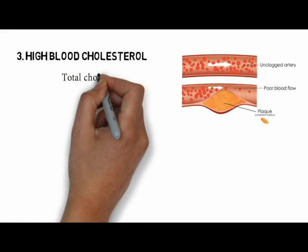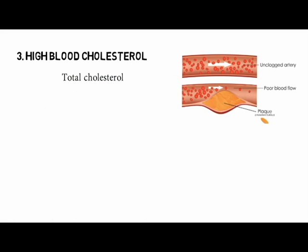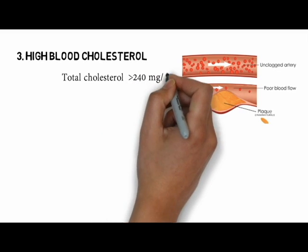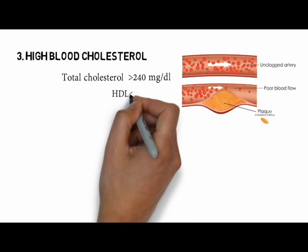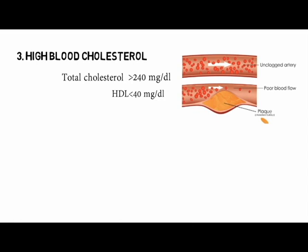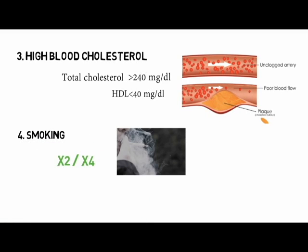Third, high blood cholesterol. A high level of total cholesterol — 240 mg/dL or higher — is a major risk factor for heart disease, which raises your risk of stroke. Low levels of HDL, less than 40 mg/dL, may also increase the risk of stroke. Fourth is smoking, which can double or even quadruple your risk of stroke.